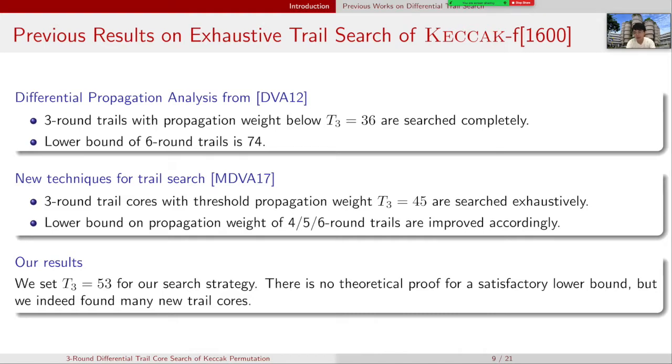Another paper, New Techniques for Trail Search from the Designers in 2017, claimed that three-round trails with threshold propagation weight 45 are searched exhaustively, and the lower bound of propagation weight of 4, 5, 6-round trails are improved accordingly.